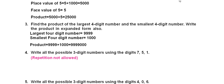Question 4: write all possible 3-digit numbers using the digits 7, 5, and 1. I will give you some examples and you find the others. The possible numbers are: 175, 157, 517, 571, 715, and 751. Note that repetition is not allowed — you cannot repeat any digit twice.